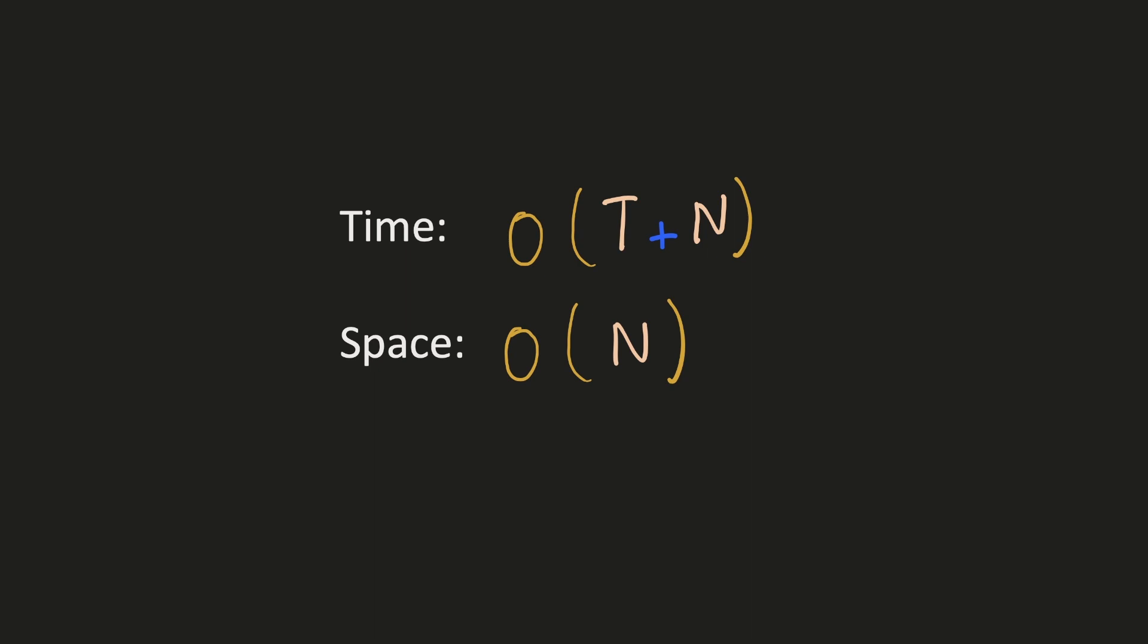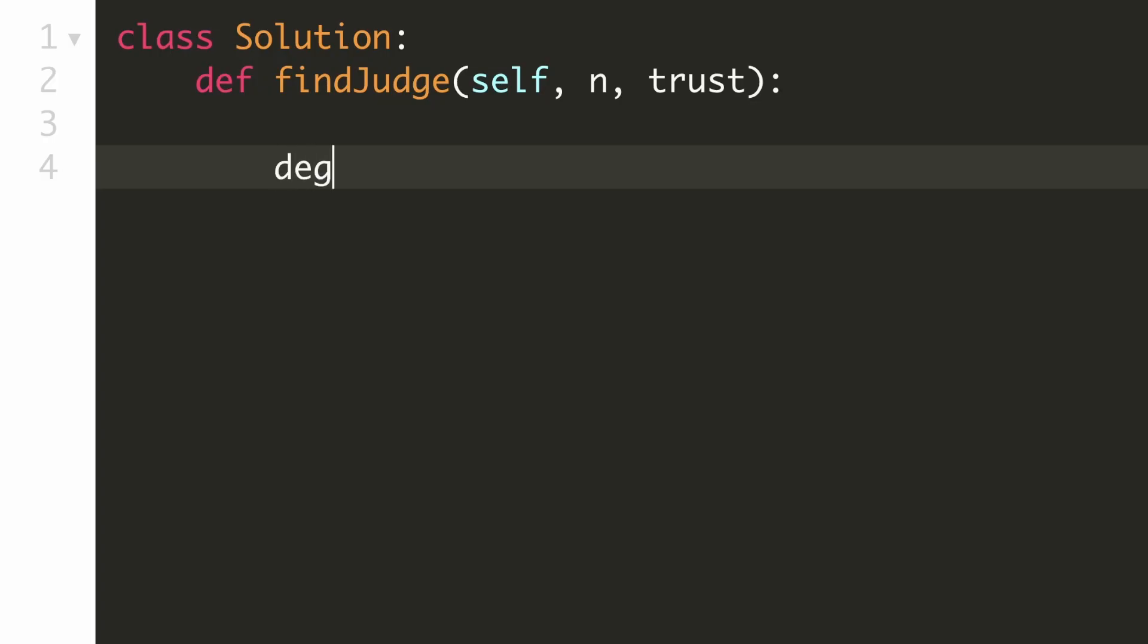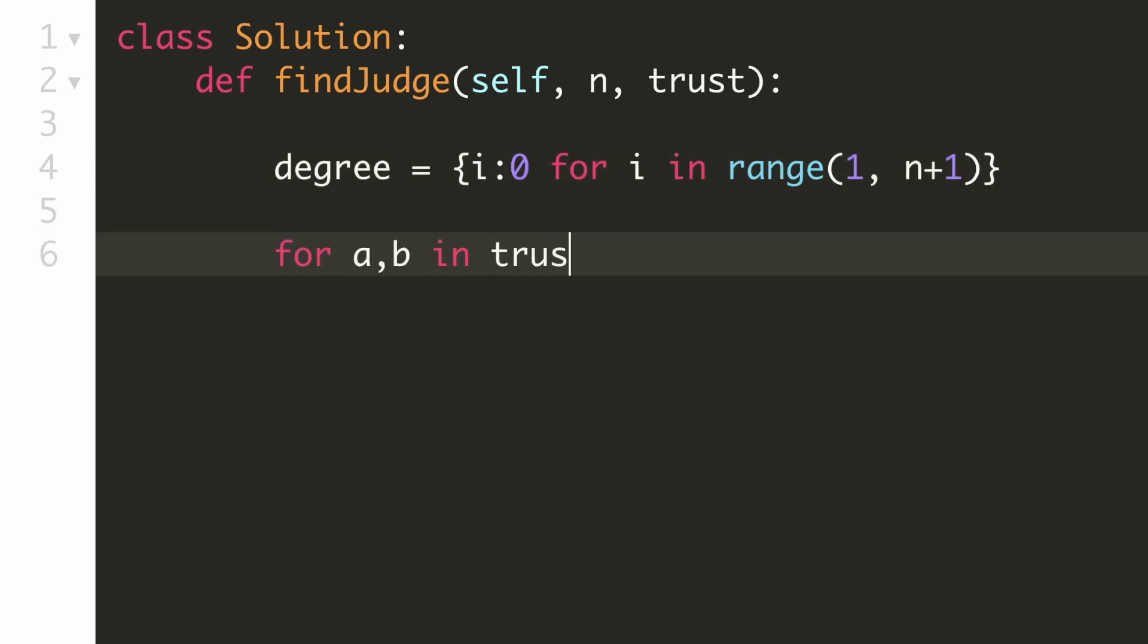Let's implement our solution. The first thing that we will need is a hash map to track the degree of each person. So we will initialize this hash map for each of the n people with their count as 0.